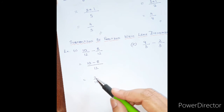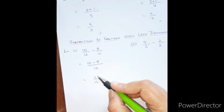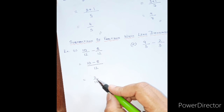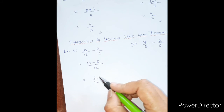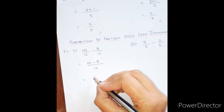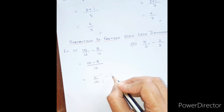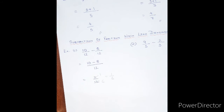The answer is 10 minus 8 equals 2 upon 12. You can further simplify this fraction because 2 and 12 are in the same table. You can reduce it to the lowest form: 2 ones are 2, and 2 sixes are 12, so the answer is 1 upon 6.